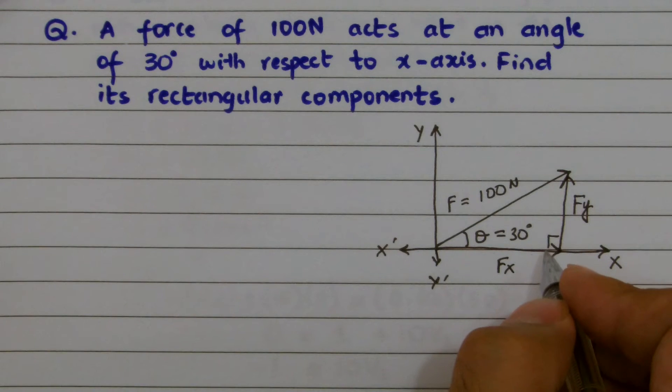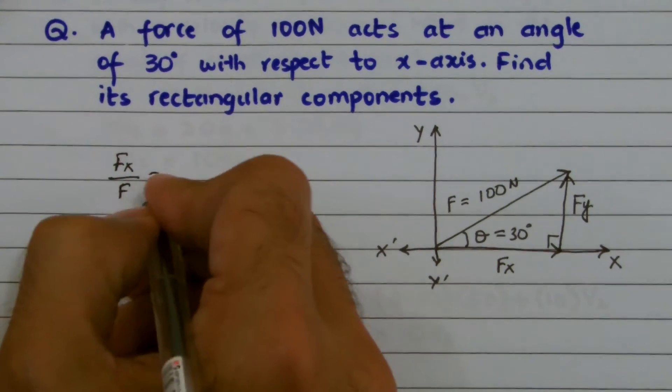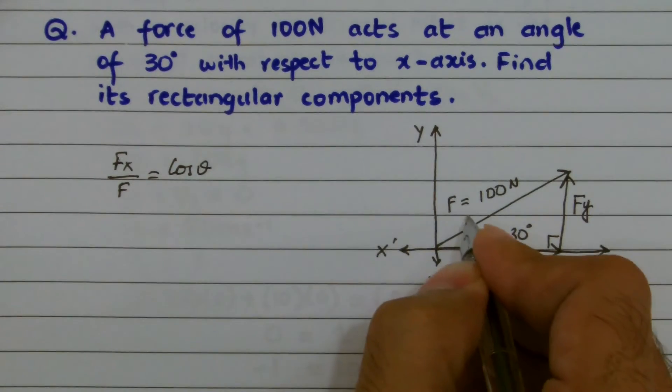Now, relating trigonometry or the trigonometric ratios to this concept, I can write fx over f equals cos theta, as the ratio between base and hypotenuse is always cos theta.